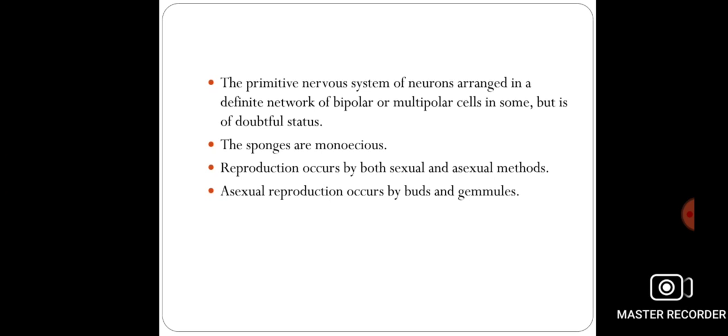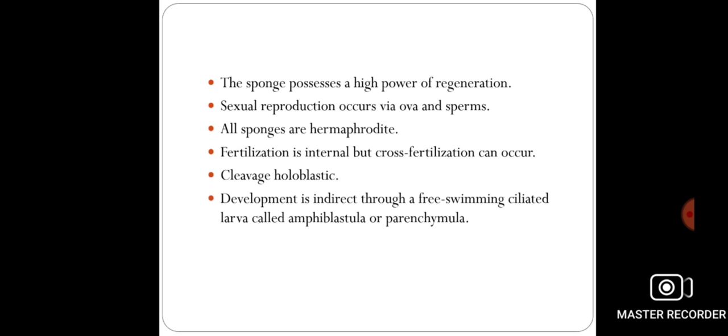In poriferans, both sexual and asexual reproduction are seen. Asexual reproduction occurs by budding or by gemmules. Poriferans possess a high power of regeneration, meaning if any part of the body is cut or lost, it is immediately replaced by a new organ or new part.